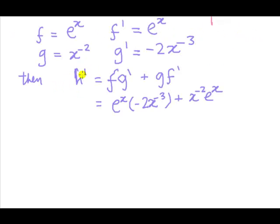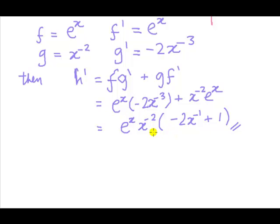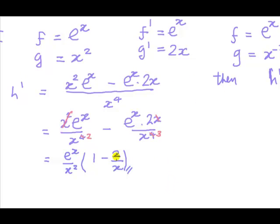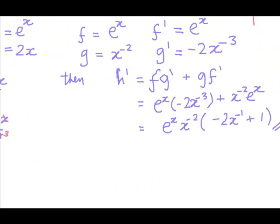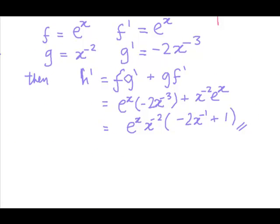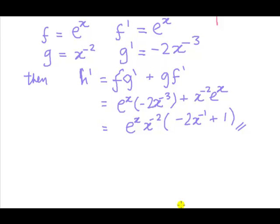Then we write down the formula for the product rule, substituting f and g and their derivatives to get the result, and then tidy it up. And here you go — common factor of e^x times x to the minus two. This expression is the same as the expression we got using the quotient rule. So which method would you prefer? Some people prefer the product rule because the quotient rule is a bit more messy. And so in this example, we've shown you that you could get away with just using the product rule.